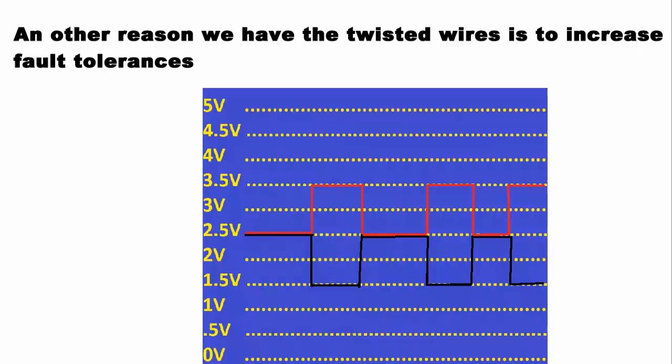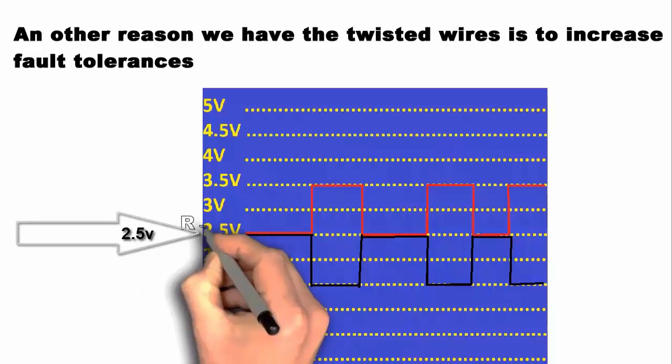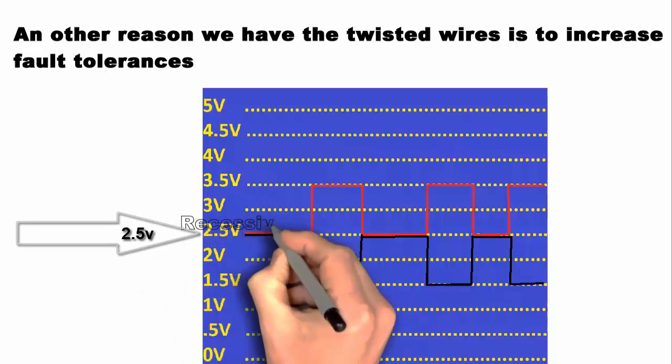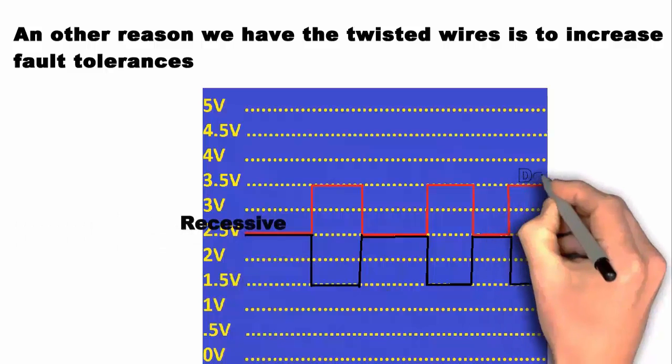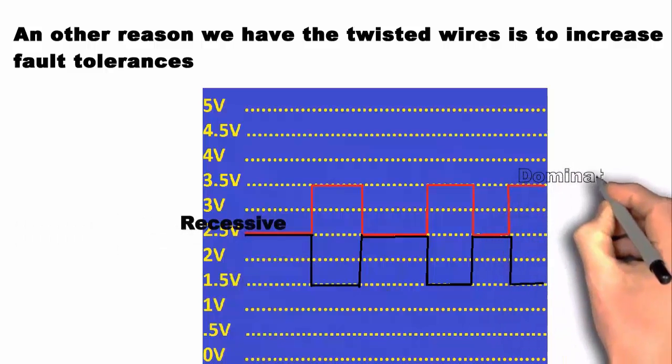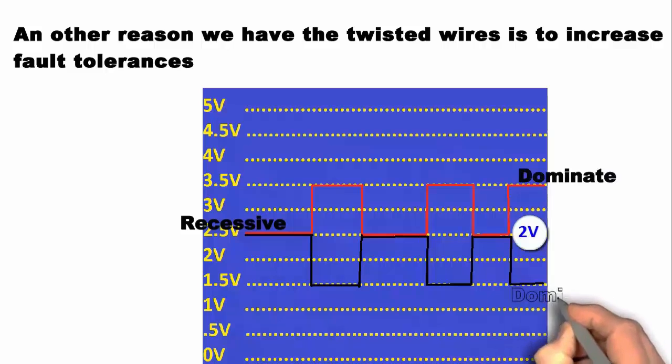If I was to tell you that the protocol uses 2.5 as a 5 volt recessive command and that the protocol only looks at the different voltages between the high CAN line and the low CAN line, being 2 volts, as a dominant 0 volt, I have confused you. I suspect I have.